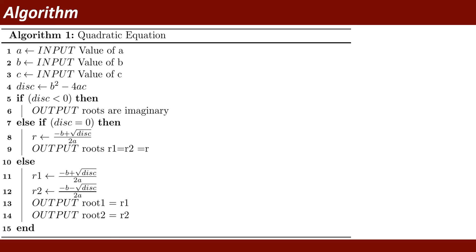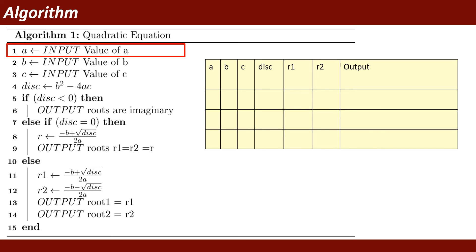In the algorithm: if disk is less than 0, display 'roots are imaginary.' Else if disk equals 0, calculate r = minus B plus square root of disk divided by 2A, and output root 1 and root 2 equal to r. Or in the case of disk greater than 0, calculate both roots separately.